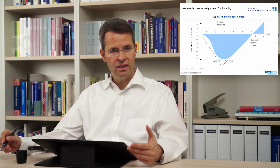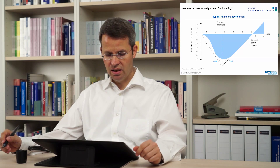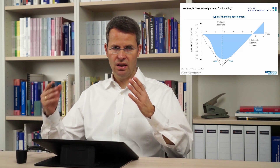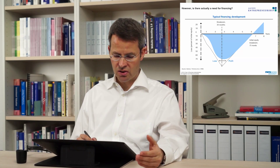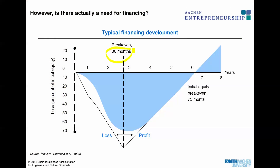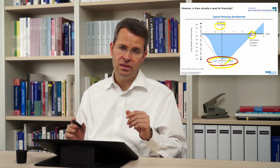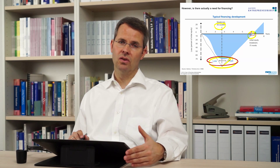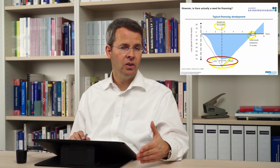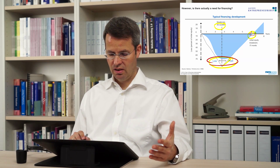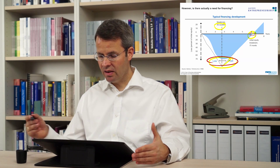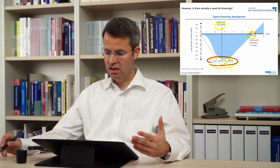That's when you have to start thinking about obtaining other sources of financing. If we look at this chart — based on around 157 companies — on average they produced losses for the first 30 months before becoming profitable on a month-to-month basis, and they earned the initial equity back after 75 months. So these high-tech companies needed a lot of money to build up and reach an initial equity break-even.